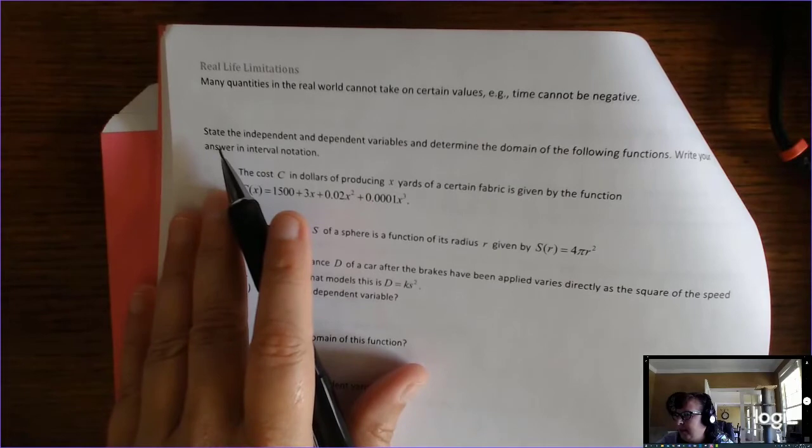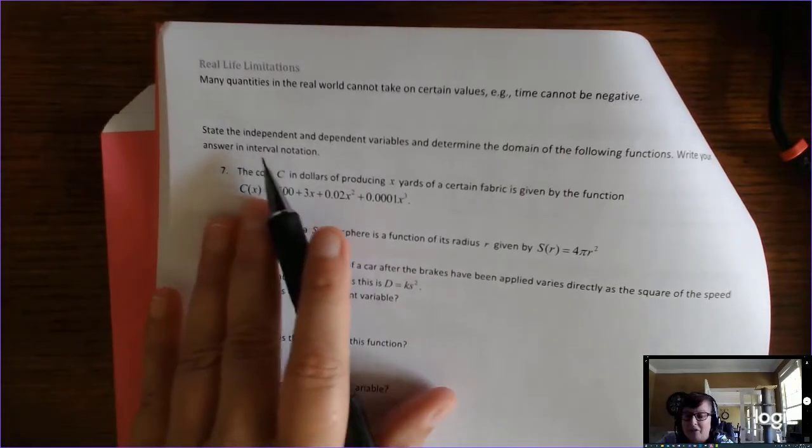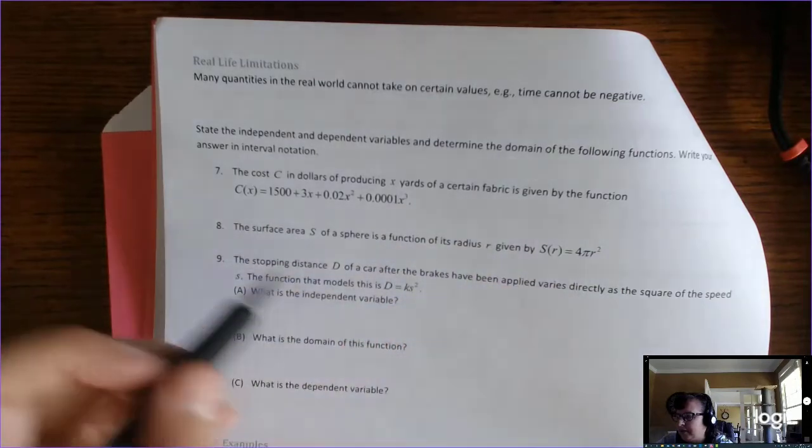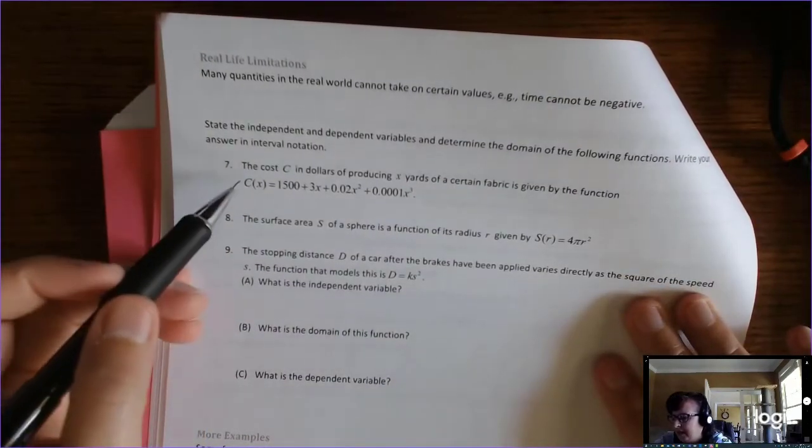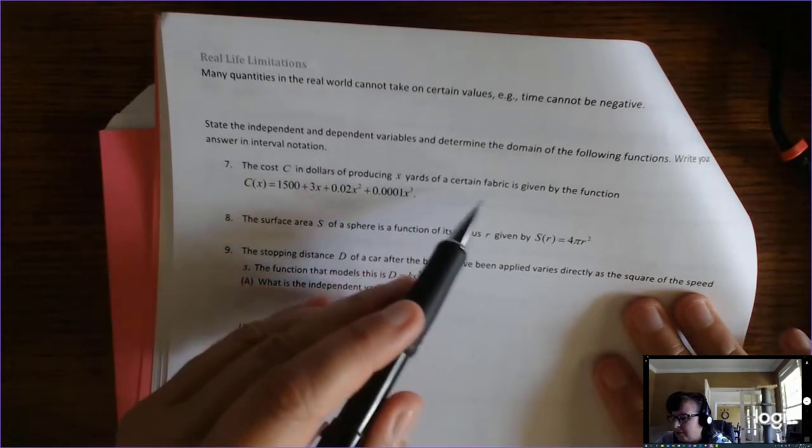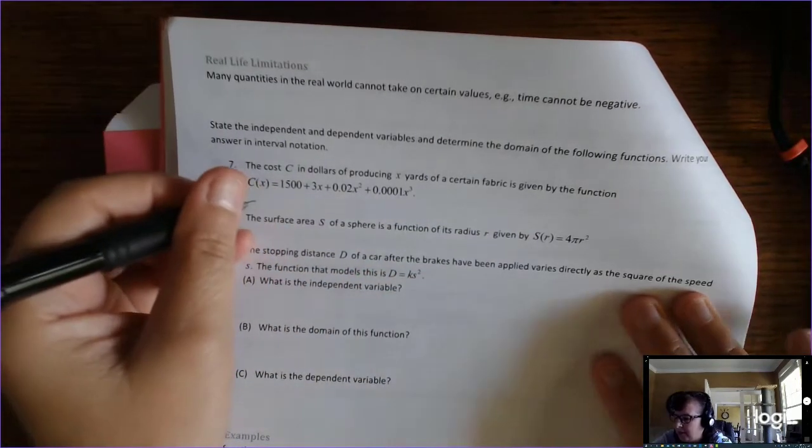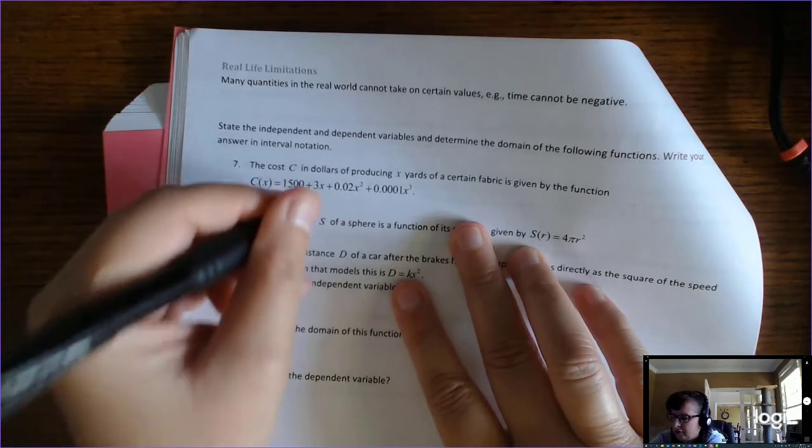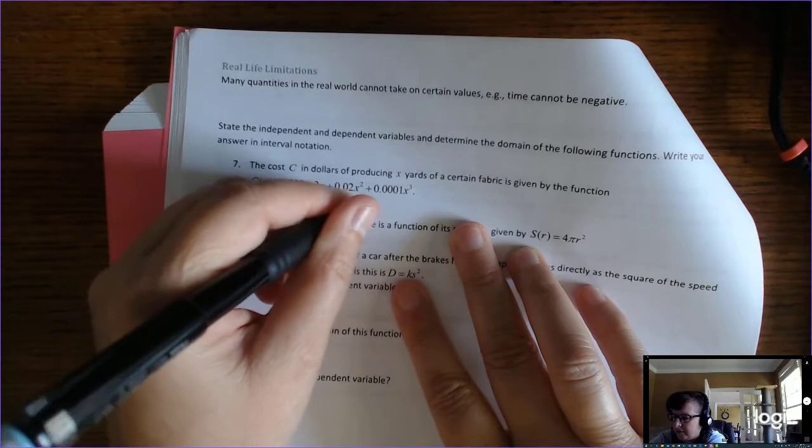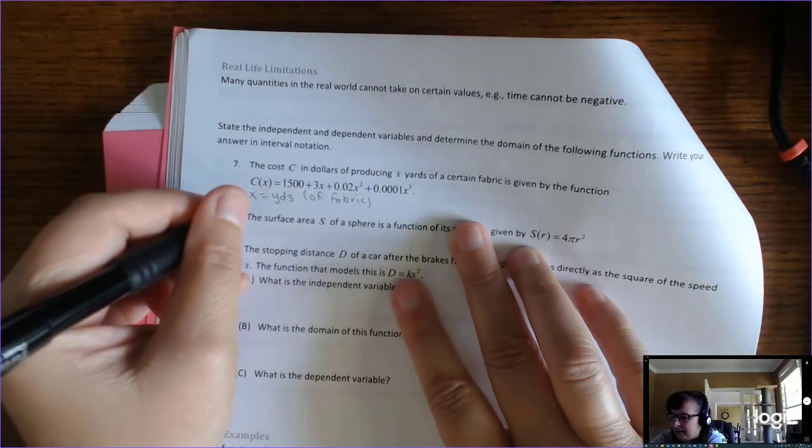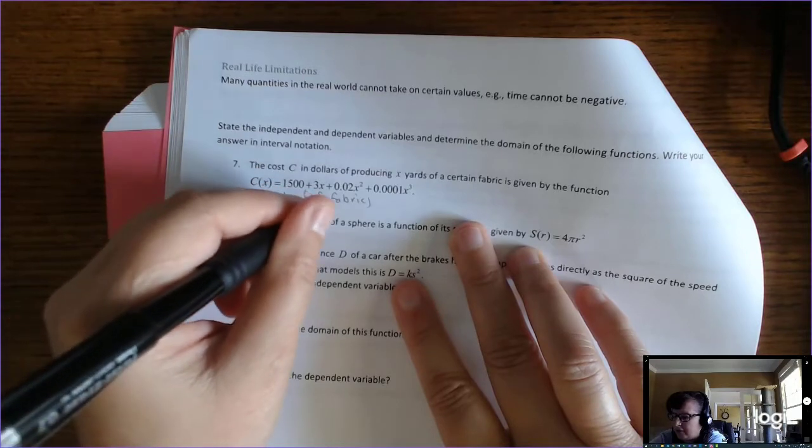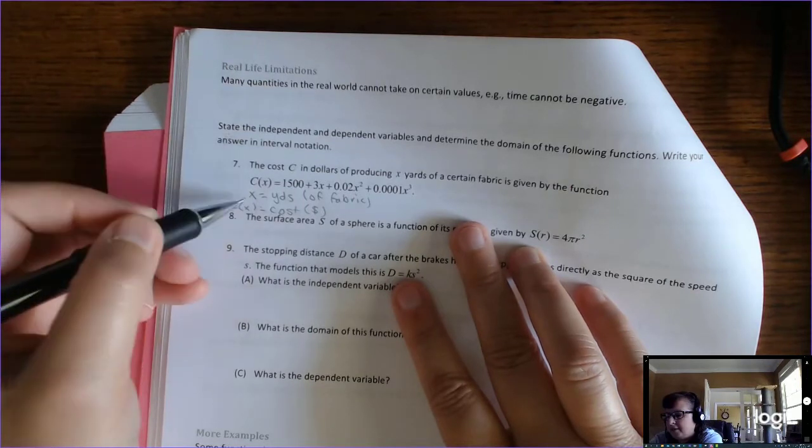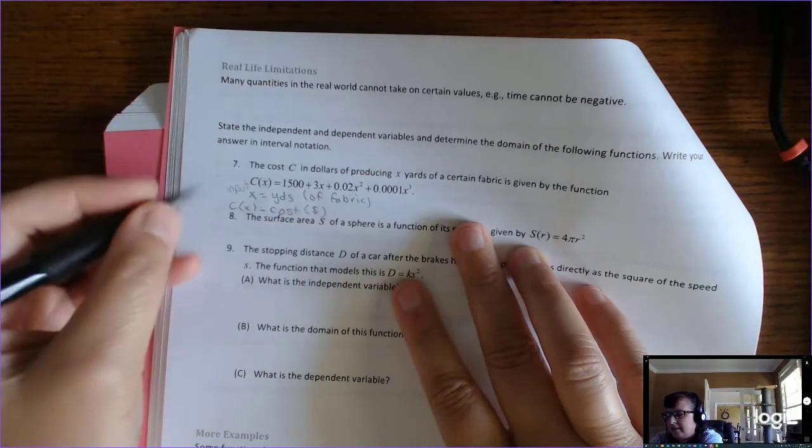So this says, state the independent and dependent variables. I call that, write your Math English Dictionary, and determine the domain of the following functions, and then write your answer in interval notation. Okay, so the first step is to read the problem. It says, the cost c in dollars of producing x yards of a certain fabric is given by this function. So, my Math English Dictionary, my input x is yards of fabric. My output is c of x, and that's the cost in dollars. So we have the independent and dependent variables. x is my input, and c is my output.